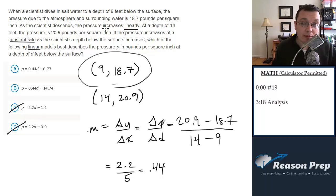If you do, it's a good sign that that's the answer. You'd have to check both points though, so that's where maybe it gets a little bit annoying. You'd have to check both 9 and 18.7 and 14 and 20.9 because my guess is that more than one of these will work for one of the points.